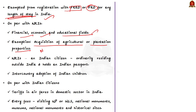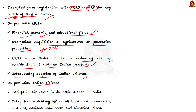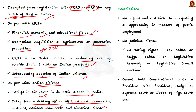An NRI is an Indian citizen who is ordinarily residing outside India and holds an Indian passport. Fourthly, OCI card holders will be treated on par with NRIs in matters of inter-country adoption of Indian children. Finally, they are treated on par with Indian citizens for tariffs in airfares in the domestic sector in India, as well as entry fees for visiting national parks, wildlife sanctuaries, national monuments, etc.